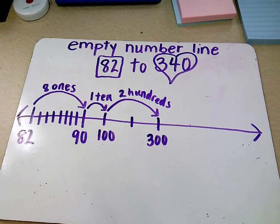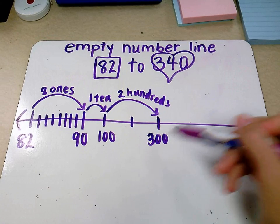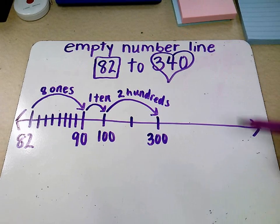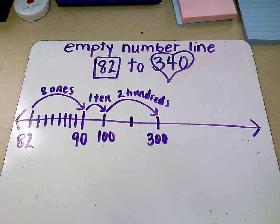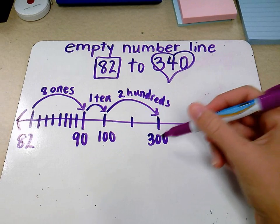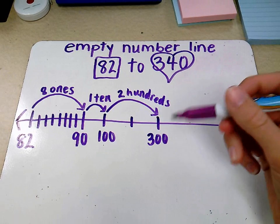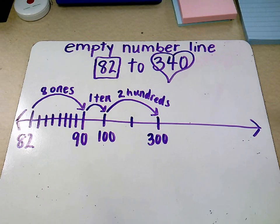But we're not there yet. I'll ask the kids, why did we stop at 300? Why didn't we keep going with our hundreds? And they'll say, because that's too much. We can't go anymore. We'll be over our goal. So once again, I stop and I ask myself, should I add by ones, tens, or hundreds to get to my goal?